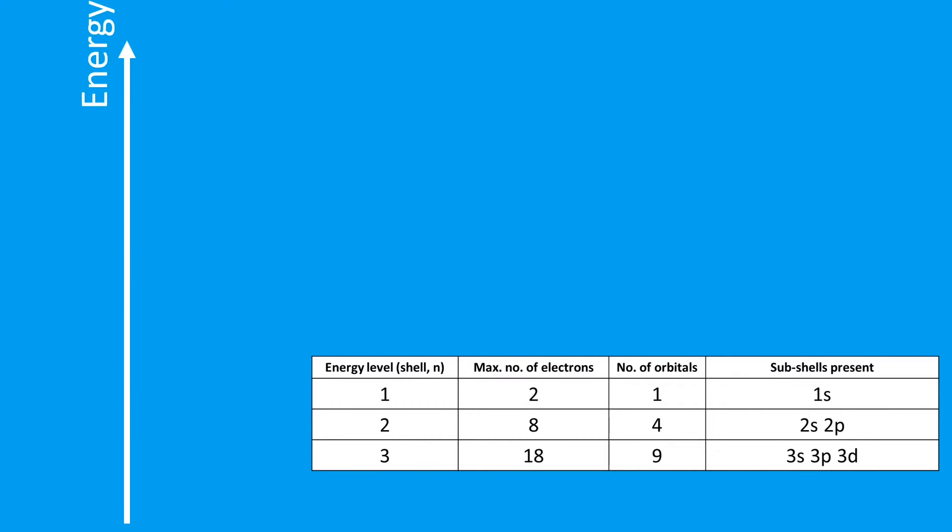In terms of energy, the Aufbau principle is that they'll occupy the lowest energy level first. The first shell is just a 1s orbital, so when we see this square box here, this blue box, that's representing an orbital. Then we move up to the second shell which contains s and p subshells. The s subshell is just one orbital, however the p subshell is three orbitals. Notice how the 2p subshell is slightly higher than the 2s subshell in terms of energy. This means the 2s will fill before the 2p.